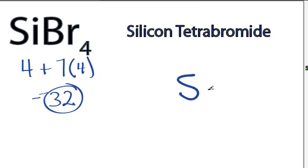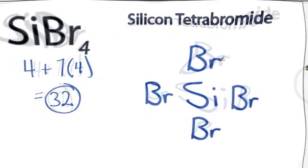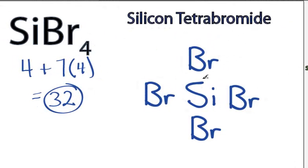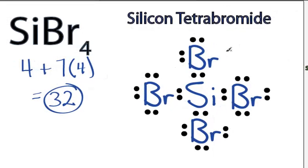Silicon is the least electronegative. We'll place that at the center, and then we'll put the bromines around it. We have a total of 32 valence electrons. We'll put 2 electrons between atoms to form chemical bonds. We've used 8, and then we'll go around the bromines to fill their octets — 10, and 32.